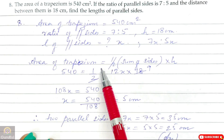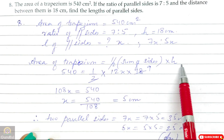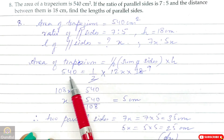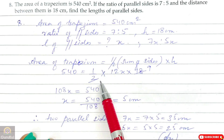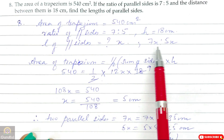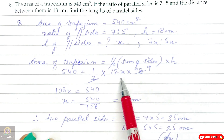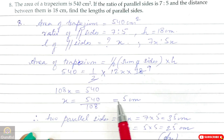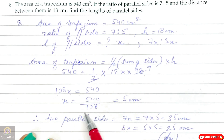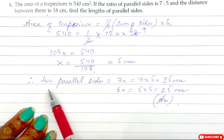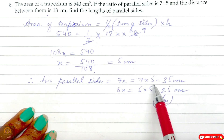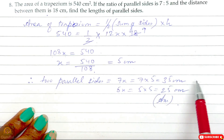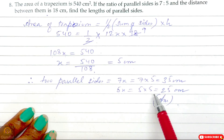Area of a trapezium = half into sum of its sides into height. So 540 = half into (7X + 5X) into 18 = half into 12X into 18. After calculation, 108X = 540, therefore X = 540 divided by 108 = 5. Therefore the two parallel sides are 7X = 35 cm and 5X = 25 cm. And this is the answer.